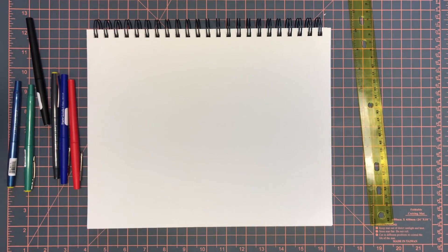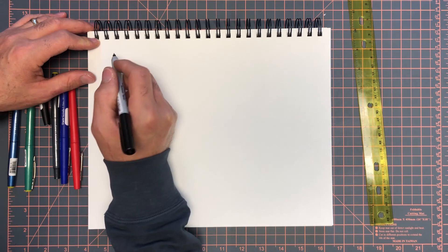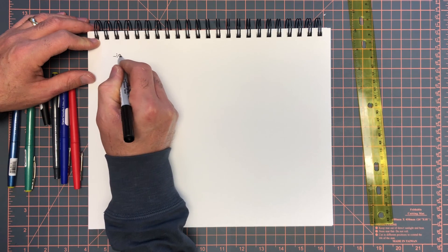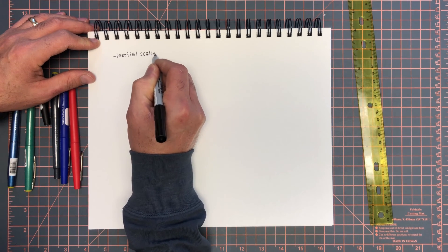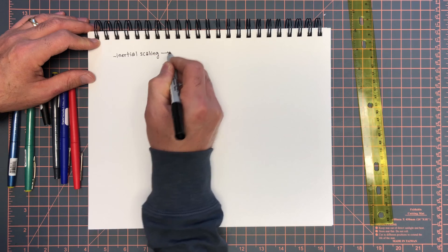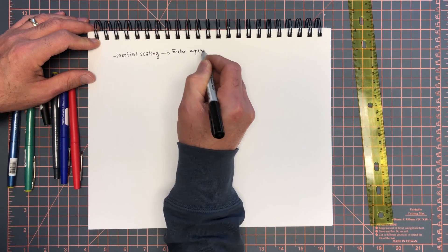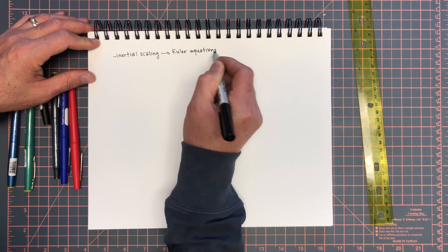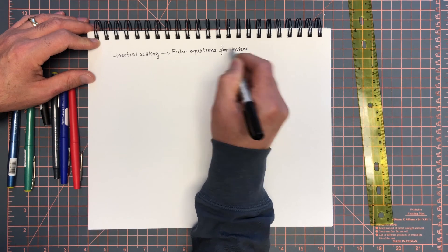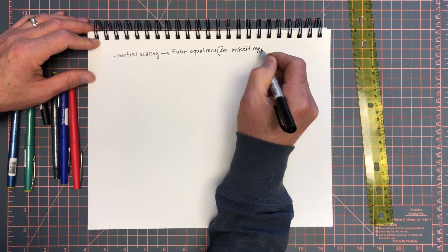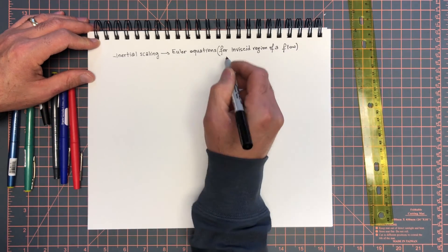Before we set out to do an example of Stokes flow, let me remind you that we first saw that the inertial scaling leads to the Euler equations for implicit regions of a flow when assuming Reynolds number goes to infinity.